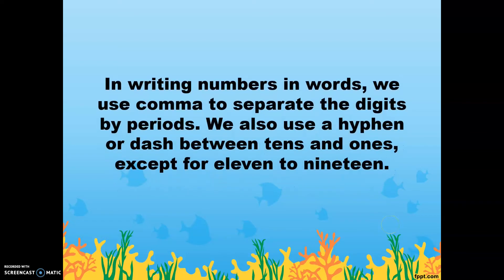In writing numbers in words, we use comma to separate the digits by periods. We also use a hyphen or dash between tens and ones except for 11 to 19. Remember, there is an exception for 11 to 19.